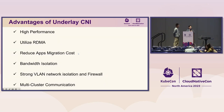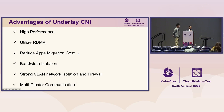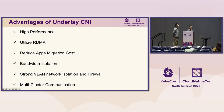Looking at the advantages of underlay CNI: it has high performance by using RDMA with SR-IOV and VLAN. It can reduce application migration costs by keeping the same traditional network pattern. It can do bandwidth isolation for different business traffic, has strong VLAN network isolation and firewall isolation, and of course it can communicate across clusters.